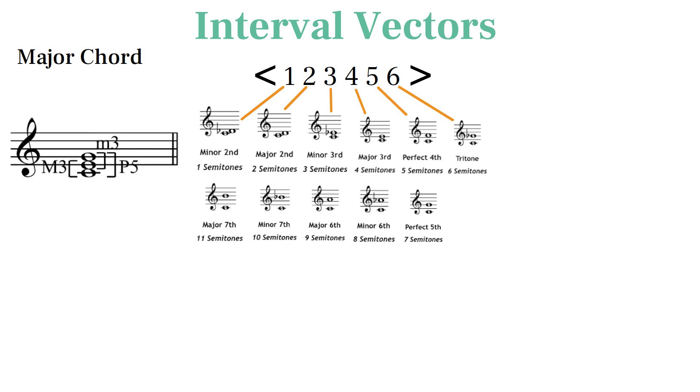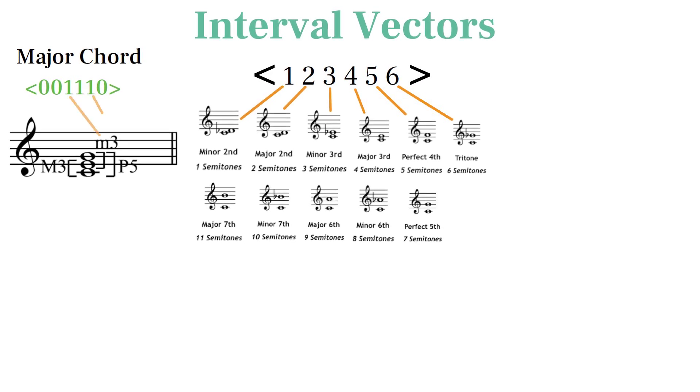We can easily see that a major chord contains a major third, minor third, and a fourth, but for larger sets, we have to make sure we compare every pitch against each other to derive the complete interval vector.